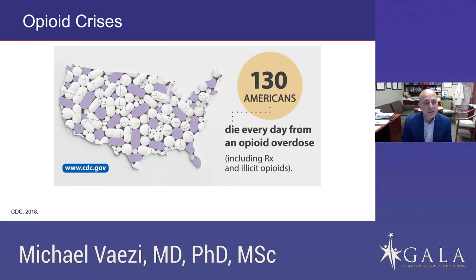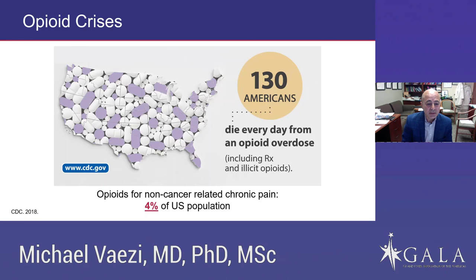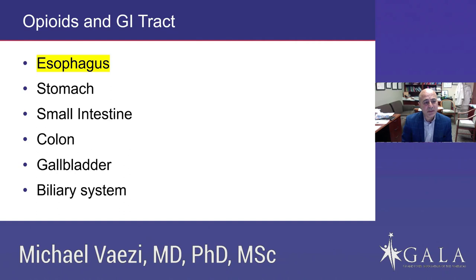We know that 130 Americans a day die from an opioid overdose. This can be either prescription or illicit use of opioids. We also know that 4% of the U.S. population use opioids for non-cancer-related chronic pain. There's no judgment on whether patients should take opioids. The issue is it is overly prescribed and overly used, leading to a national crisis. My focus is going to be on the esophagus.